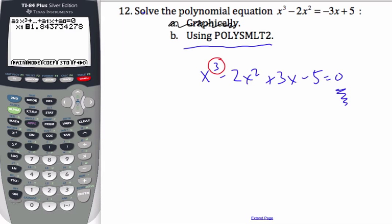You'll see that this one has only one solution this time. It's 1.84 to 3 significant figures. If there are more solutions, they would list them all here. So that's using PolySmlt2 to solve a polynomial equation.